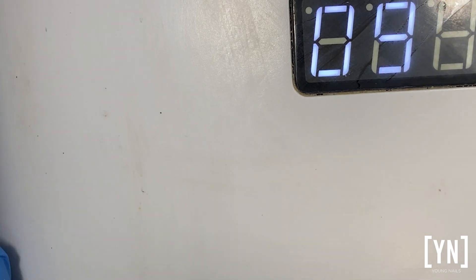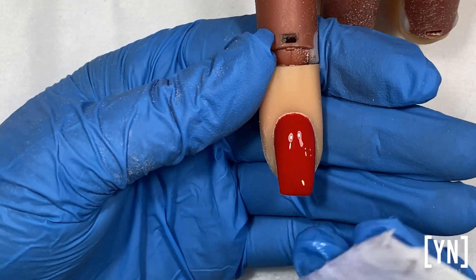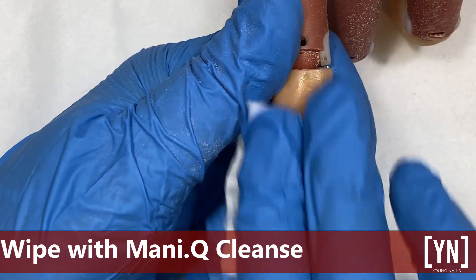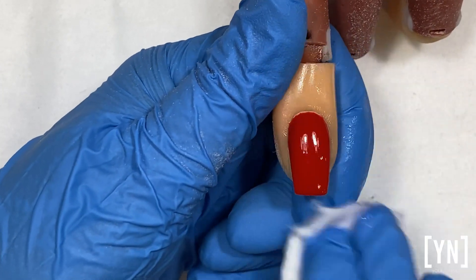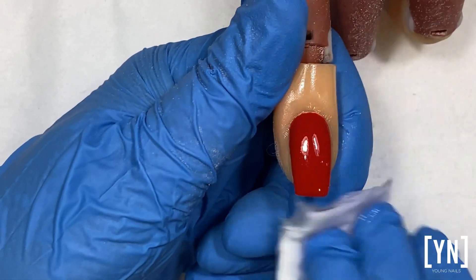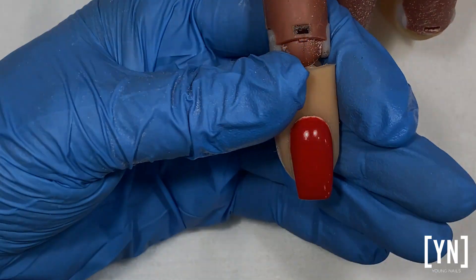If you have a thin application, you won't have running. After my 60-second cure, I'm going to wipe the sticky residue with my manicure cleanser. I prefer manicure cleanser because I get a higher shine. So I'm just really going to give this nail a good rub to end off with a beautiful red, full-color nail.